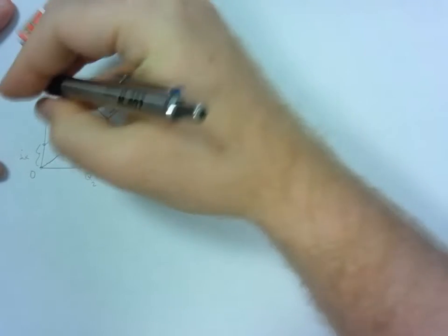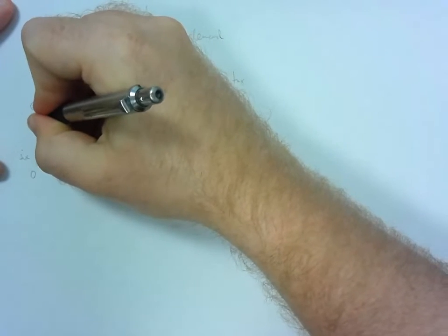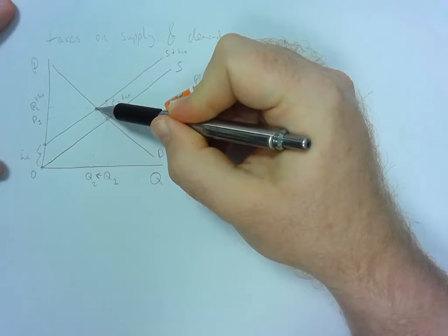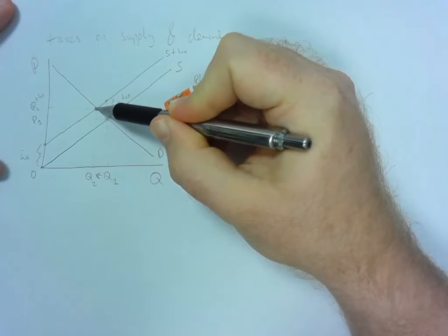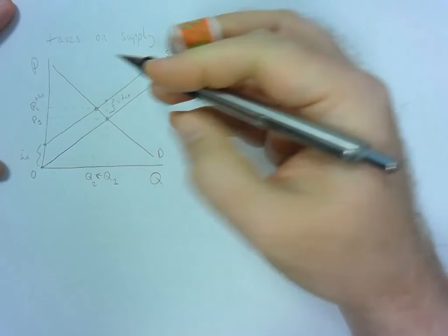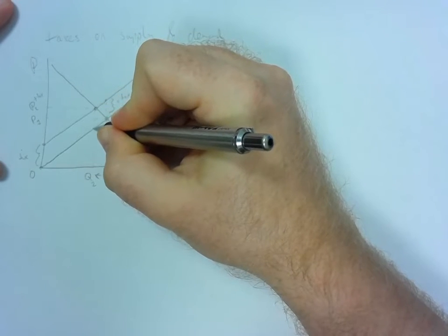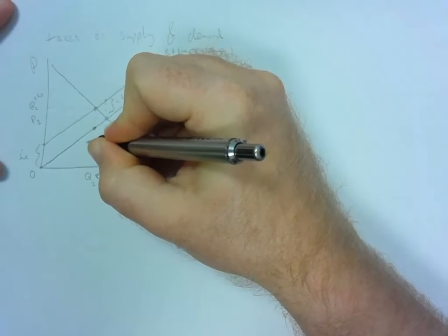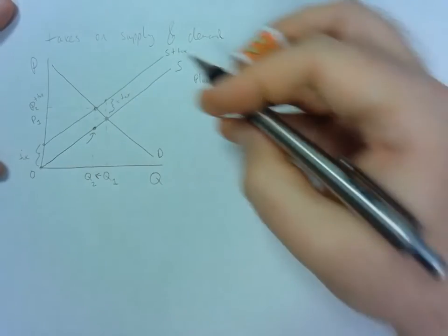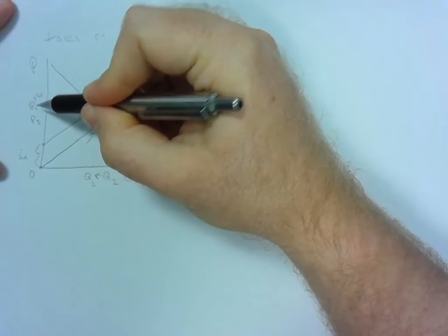And then we end up with a higher price. We'll call it P2, which is the price after the tax. But what's interesting here is that this new price isn't the price that the sellers receive because they have to pay the tax. So they actually receive the price plus tax minus the tax or this new price right here. So what happens is when you put a tax on sellers, you actually see equilibrium quantity go down and equilibrium price go up.